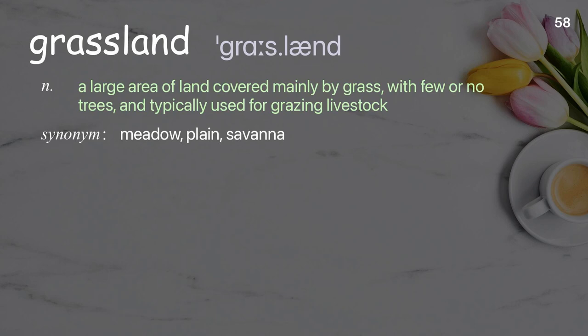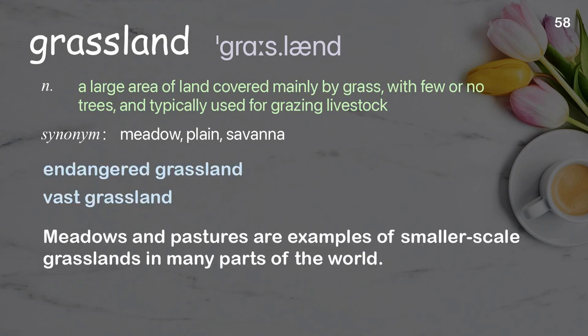Grassland: A large area of land covered mainly by grass, with few or no trees, and typically used for grazing livestock. Examples: Endangered grassland, vast grassland. Meadows and pastures are examples of smaller scale grasslands in many parts of the world.